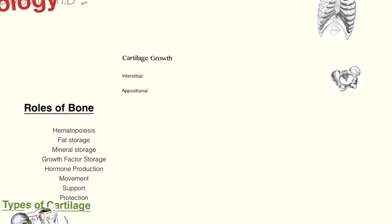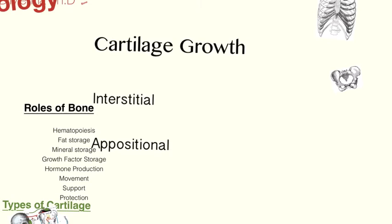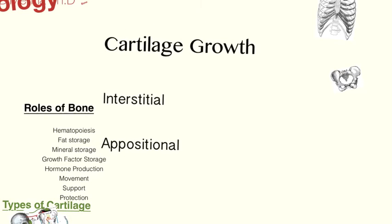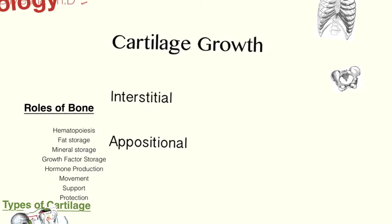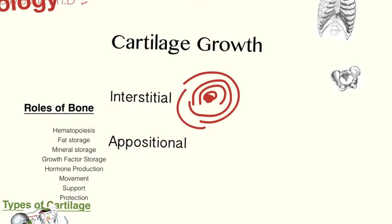Now that we've seen where cartilage is located, let's talk a little bit about how it grows. It grows in two ways: interstitial and appositional. Interstitial growth is where new matrix is made from within the cartilage — it grows from the inside outward. Appositional growth is a little different — this is cartilage that is laid down layer upon layer as new cartilage-forming cells are secreting within the existing cartilage.